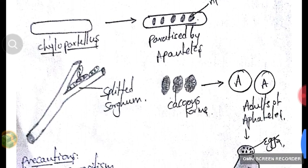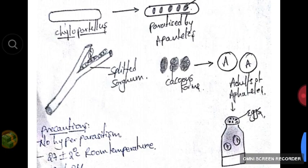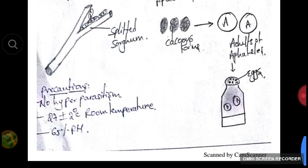Let's see the diagrammatic representation. We take Chylopateles, already parasitized by Apantheles. We place the parasitized Chylopateles on slitted sorghum. Cocoons of Apantheles are formed; we wait for adult emergence. We place the adults in a jar, cover it with black cloth, and the female lays eggs on the black cloth. Precaution: no hyperparasitism should occur. Room temperature should be maintained at 27 plus or minus 2 degrees Celsius, and humidity should be maintained at 65 percent.